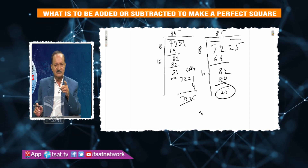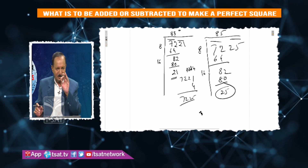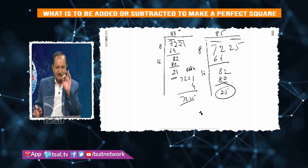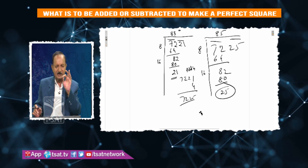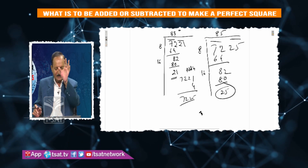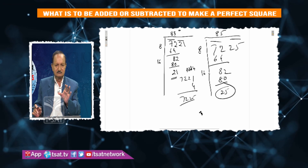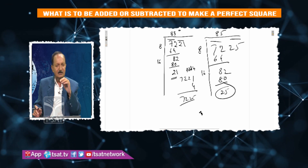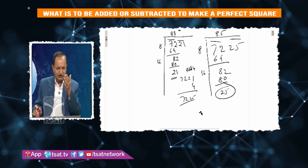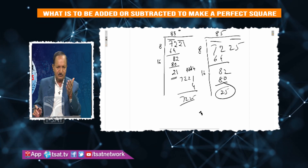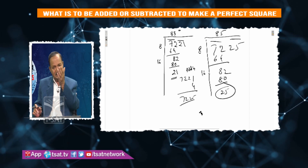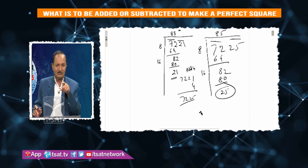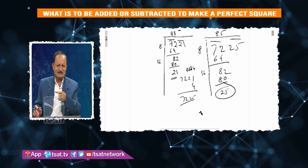So, 7, 2, 5 is the perfect square. What you have to do is find what is to be added or subtracted to make it a perfect square. That number is the square root. Remember, the remainder is the perfect square — you have to do this.